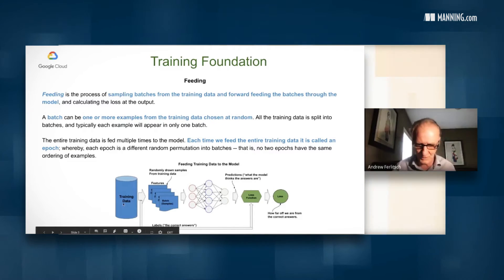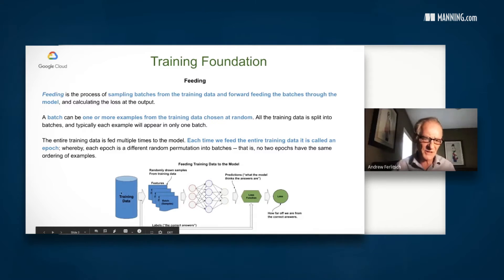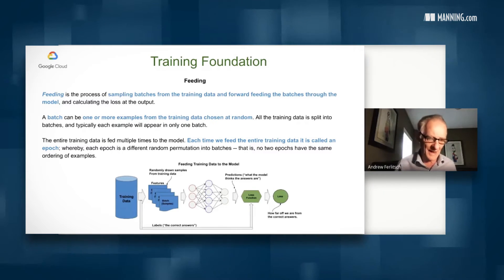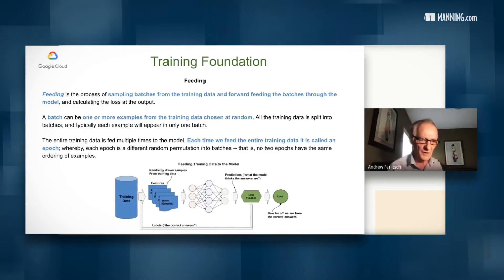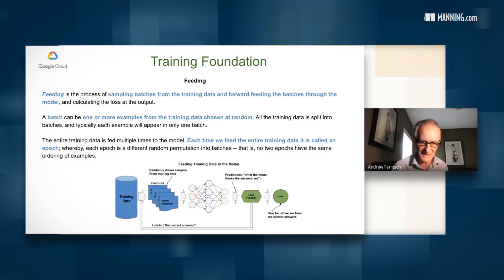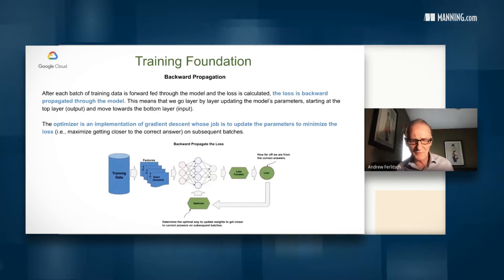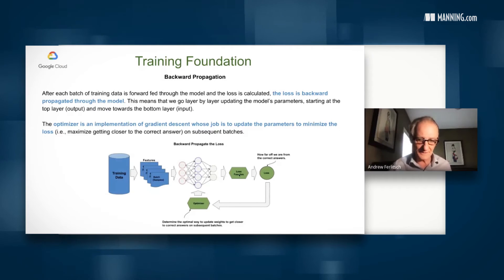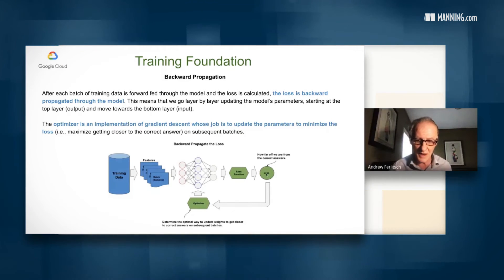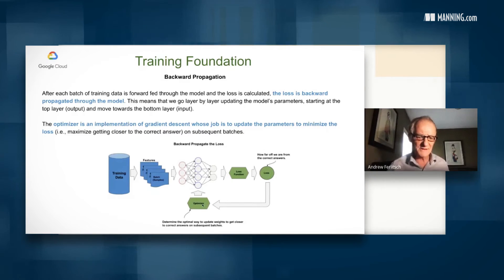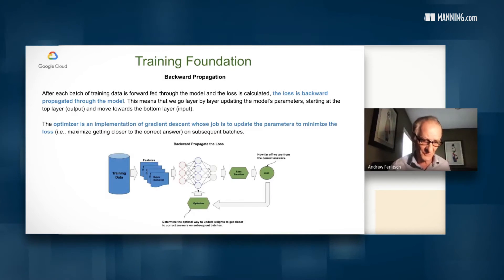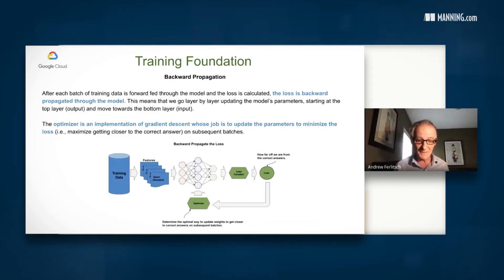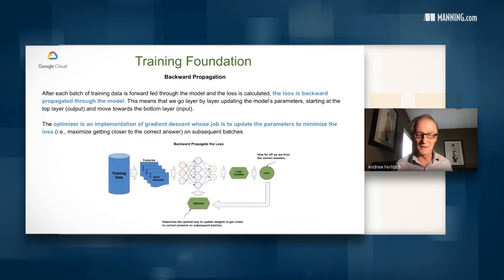That is, a number of times we're going to feed all the training data as batches. But each time we do that, we'll get a different set of batches. So even the batches, how they're drawn from the training data are randomized each and every epoch. So no two epochs see the exact same ordering of examples. So on the backward propagation part, we take our batches, we feed it through. After every batch, we're going to calculate a loss. We have a loss function that calculates the loss, and we're going to take that value to our optimizer. And it's in our optimizer that's going to update the parameters, also referred to as the weights of this model. And the job of the optimizer is to find an optimal way to update the weights to get closer to the correct answers on subsequent batches.